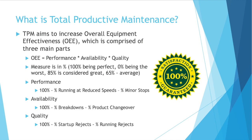So each metric we can break down. For performance, you start at 100%. You subtract out any time you're running at a reduced speed, and you also subtract out the percent of the time you're at a minor stop. That will give you your total percent performance.